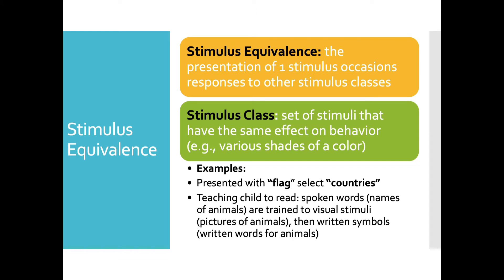The term stimulus equivalence simply means that the presentation of one stimulus occasions responses to other stimulus classes. A stimulus class is basically a set of stimuli that have the same effect on behavior. For example, various shades of the color blue have the same effect of us calling it blue. Another example: teaching a student that a specific flag equals a specific country — a flag with red and white stripes, a blue field and stars equals the United States, as opposed to other flags equaling other countries.